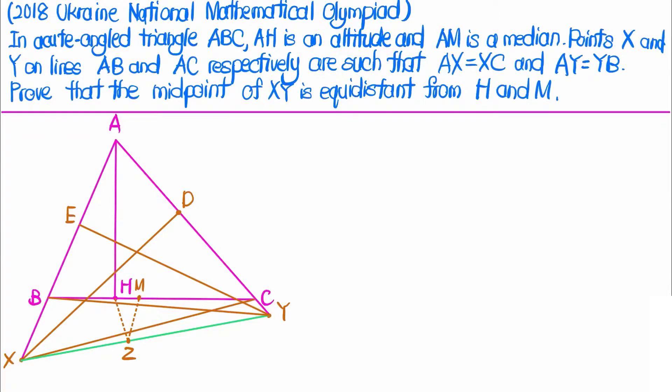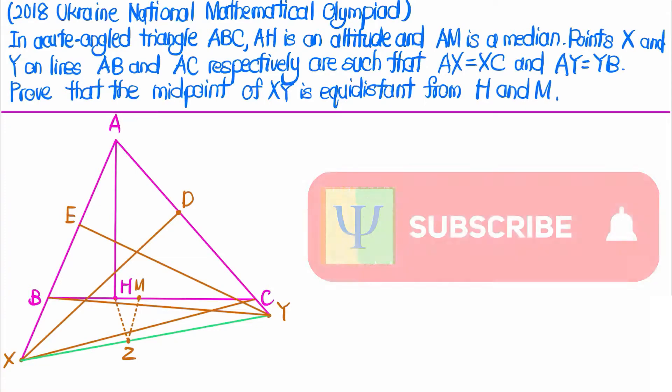Let's solve a geometry problem from the 2018 Ukraine National Mathematical Olympiad. In an acute-angled triangle ABC, AH is an altitude and AM is a median. Points X and Y lie on lines AB and AC respectively such that AX equals XC and AY equals YB. We want to prove that the midpoint of XY is equally distant from M and H.